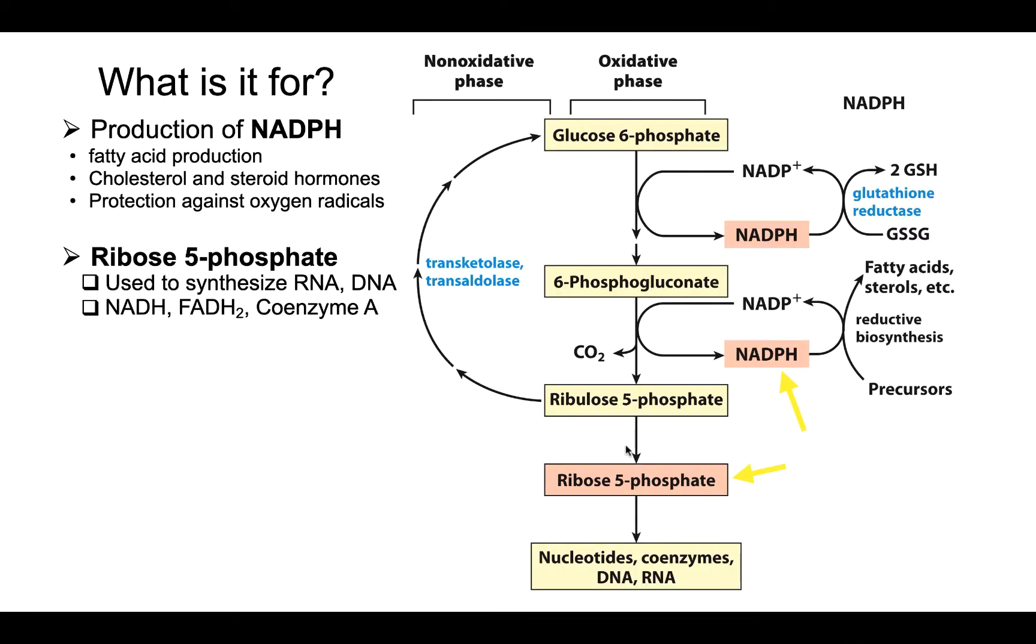and ribose 5-phosphate is used to make RNA and DNA, NADH, FADH2, and coenzyme A - all sorts of things. In addition, we are oxidizing glucose and those hydrogens and electrons are being